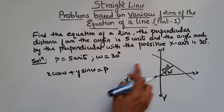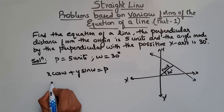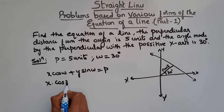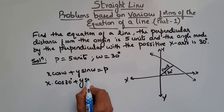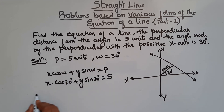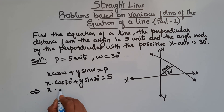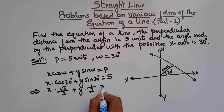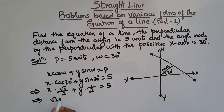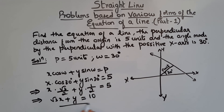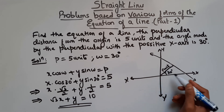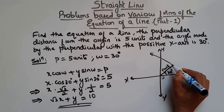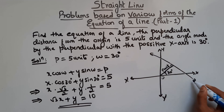Using this formula: x·cos(30°) + y·sin(30°) = 5. Substituting cos(30°) = √3/2 and sin(30°) = 1/2: x·(√3/2) + y·(1/2) = 5. Simplifying: √3x + y = 10. This is the equation of the line whose perpendicular distance from the origin is 5 units.